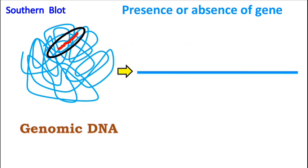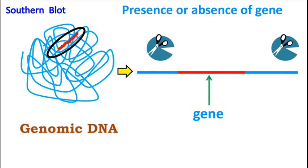For the restriction digestion, the restriction enzyme is selected such that it cleaves upstream and downstream of the gene.